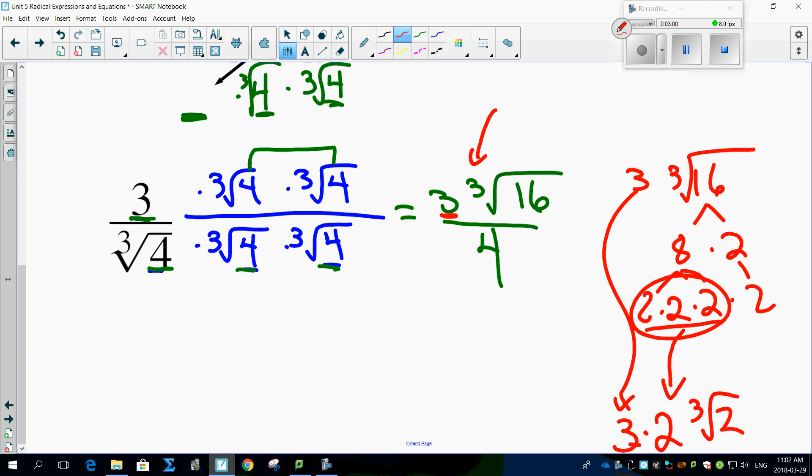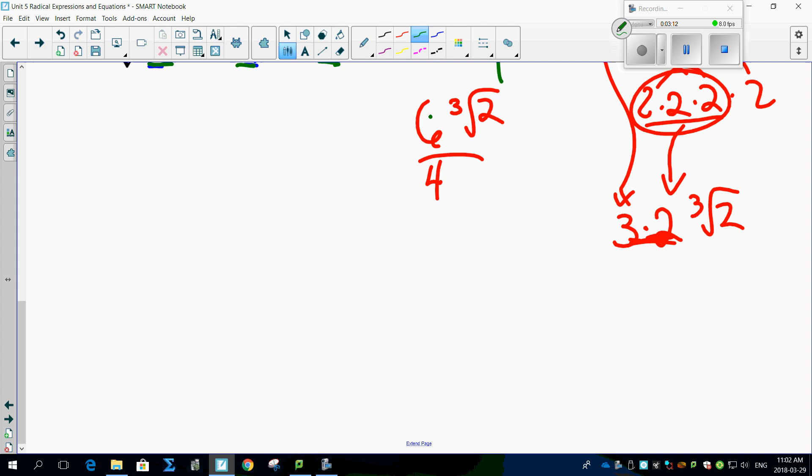So this, in fact, is 6 cube root 2. So this guy becomes 6 cube root 2 over 4. And don't forget, now that that's 6 and 4, you can reduce that by two.